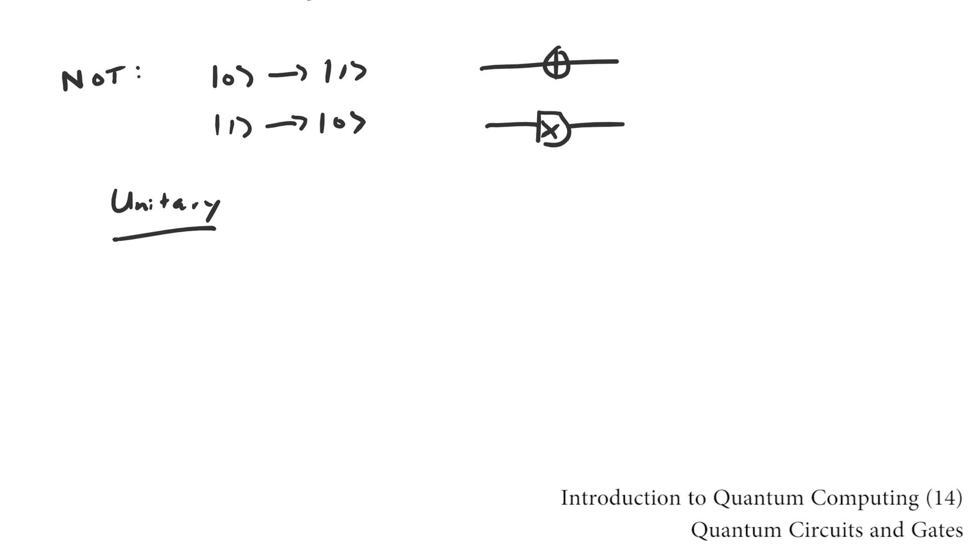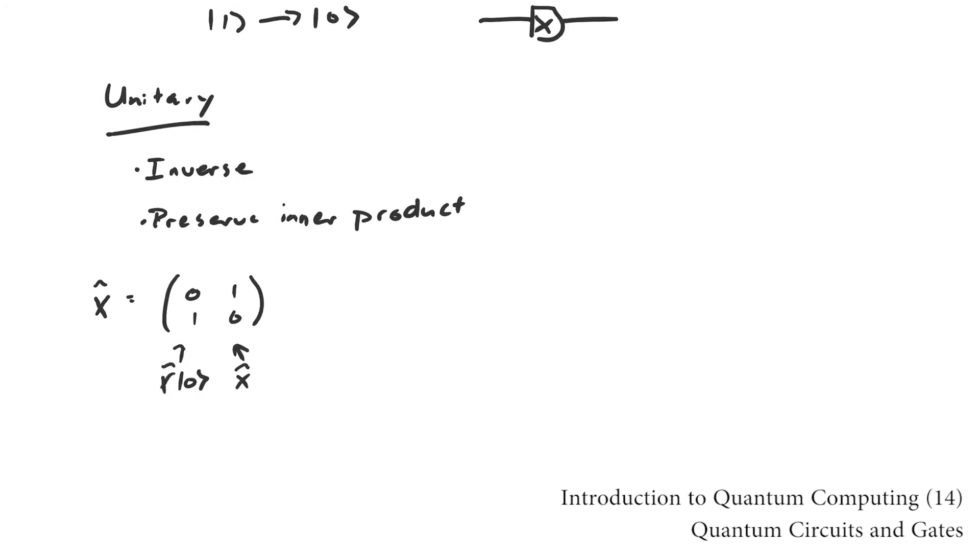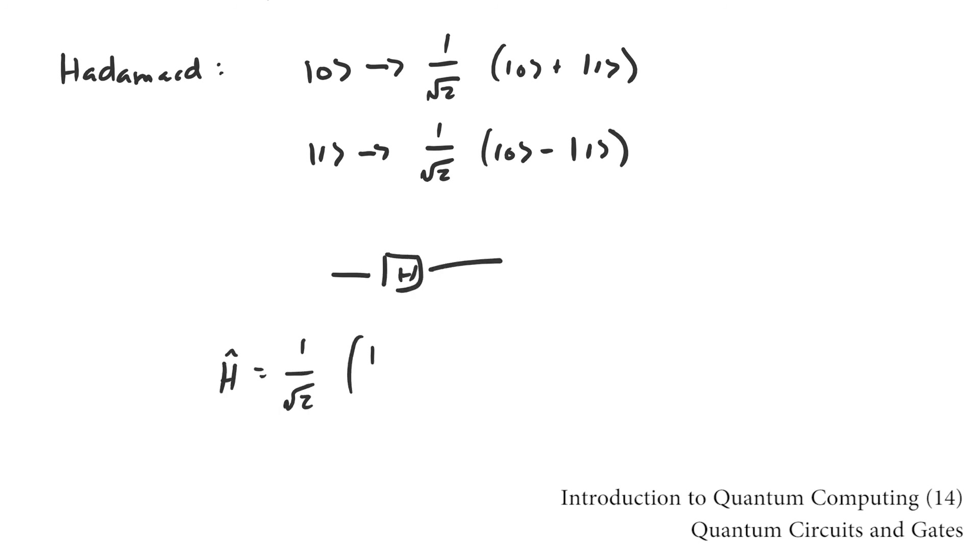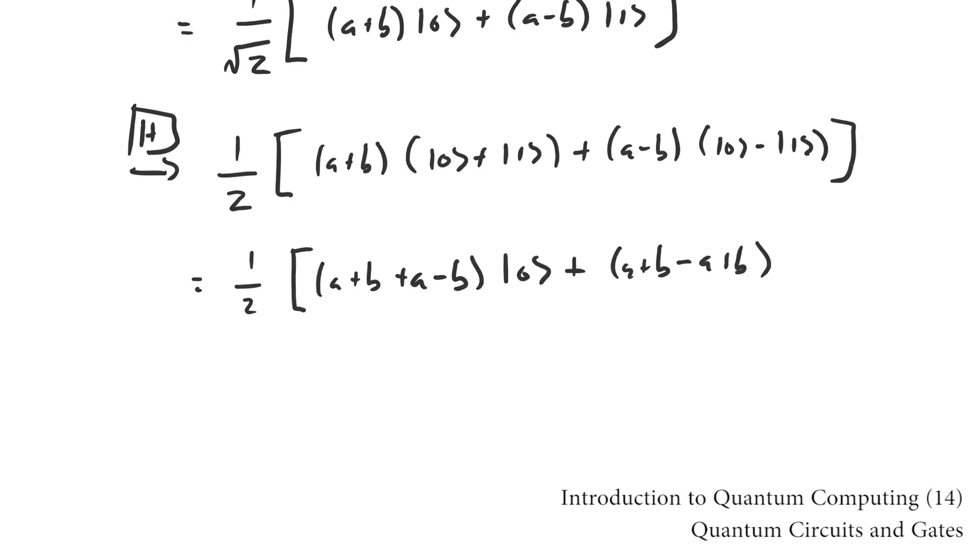Among other things, this means they're reversible and preserve inner products, which is good because this means if we pass in a normalized vector, we get one out. Another popular gate is the Hadamard gate, not to be confused with the Hamiltonian. It's useful in creating the uniform superposition. One interesting property of the Hadamard gate is that it's its own inverse. Applying it twice does nothing.